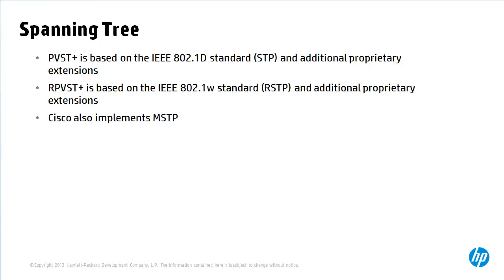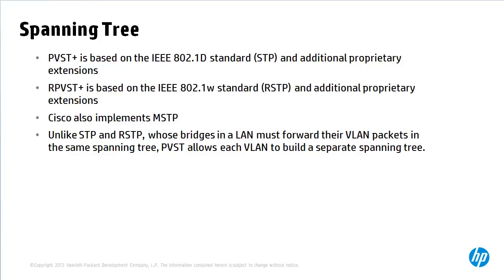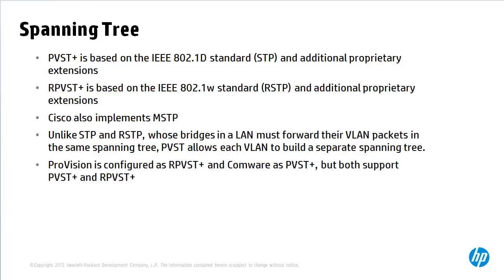Cisco does also implement multiple spanning tree, but unlike spanning tree or rapid spanning tree where bridges in a LAN must forward their packets in the same spanning tree, PVST allows each VLAN to build a separate spanning tree — in other words, there's a spanning tree instance per VLAN. Provision switches are configured to use Rapid PVST Plus and Comware switches to use PVST Plus, but both do support PVST and Rapid PVST.